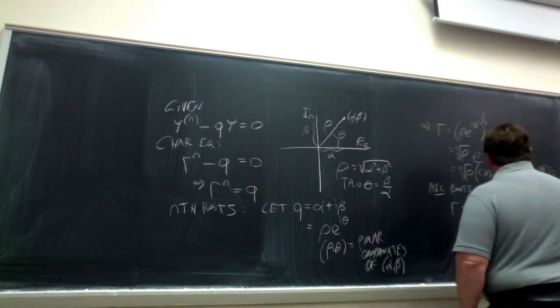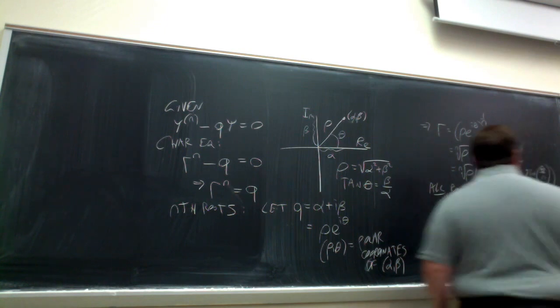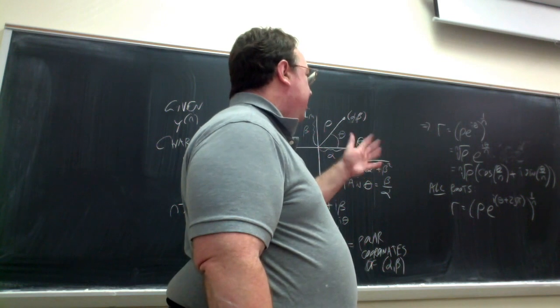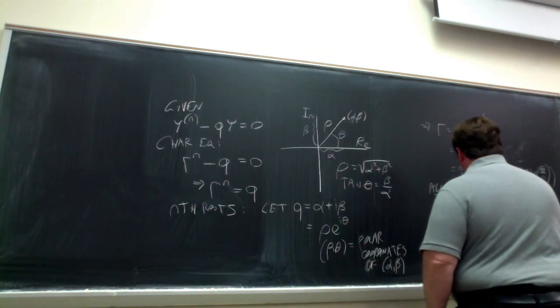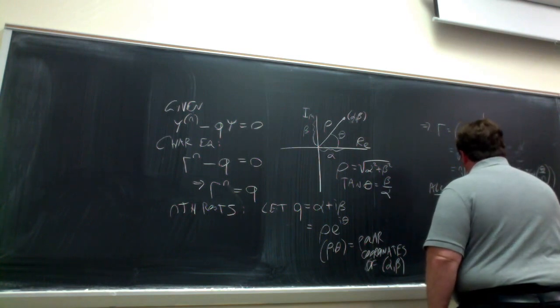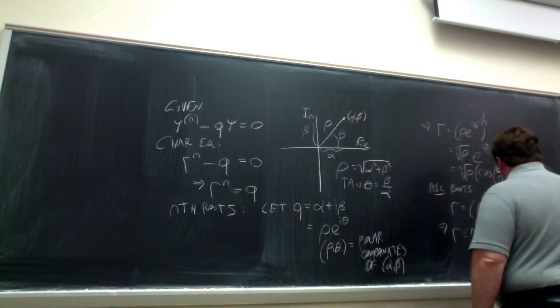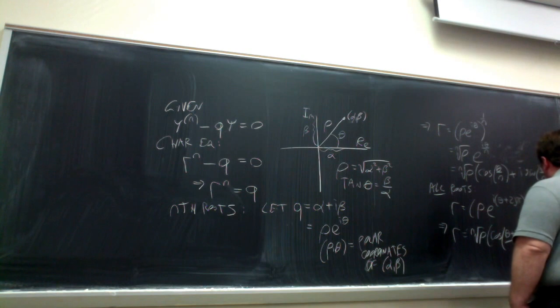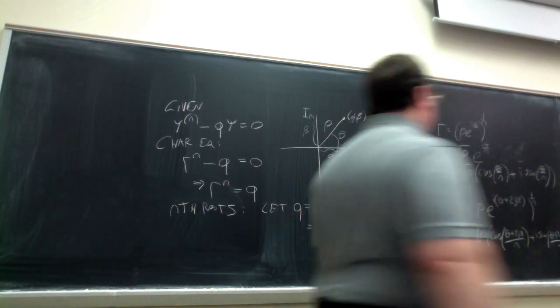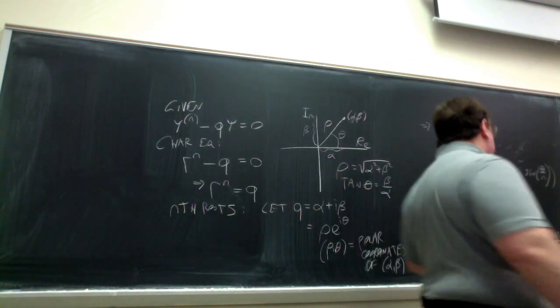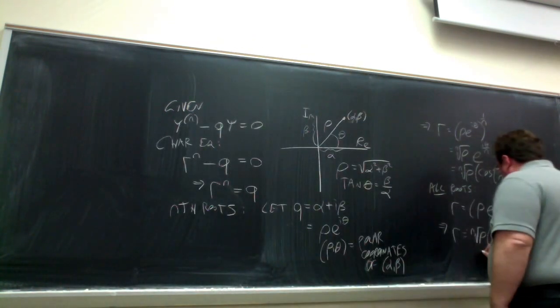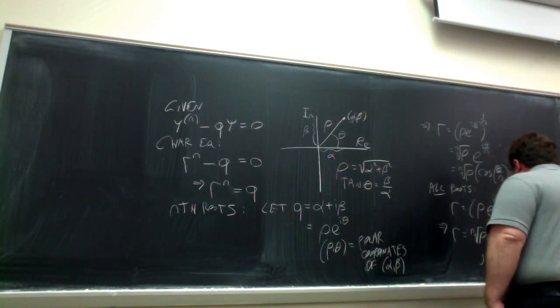Because cosine and sine are 2 pi periodic, I can add any integer multiple of 2 pi to this angle, and the value is not going to change. So now, if I raise this to the 1 over n power, I can get all the roots. So nth root of the magnitude, and then we have cosine theta plus 2j pi all over n, plus i sine theta plus 2j pi all over n.